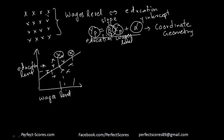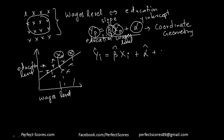So what we do is draw a sample from this population — a very small part — which may not represent the actual line. The equation for our sample estimate is: yi-hat equals beta-hat times xi plus alpha-hat. Since we cannot find it perfectly, there will always be an error term associated with it. This error term accounts for the difference between our estimate and the true population value.